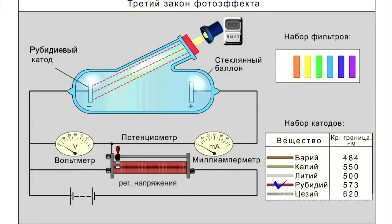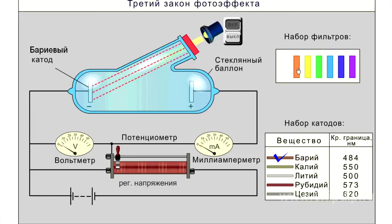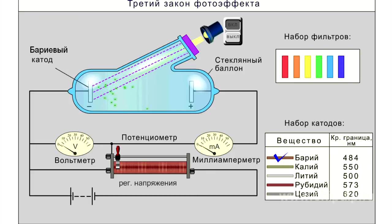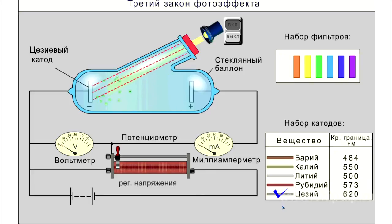For example, the small wavelengths of such metals as copper, iron, barium, and some others correspond to the threshold frequency. Therefore, these metals are insensitive to the ultraviolet radiation.